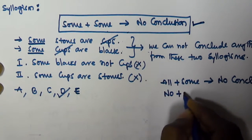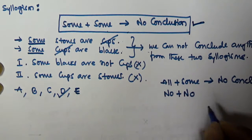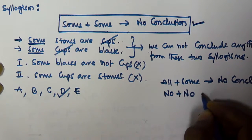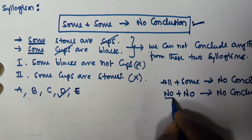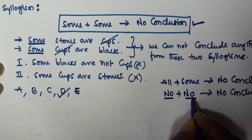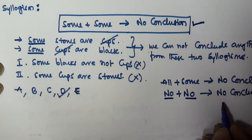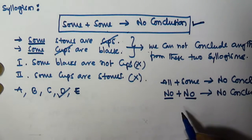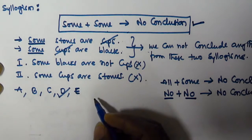Also, 'no plus no' gives no conclusion — whenever the first statement starts with 'no' and the second also starts with 'no,' and the predicate of the first is equivalent to the subject of the second. In that case we cannot conclude anything either, so directly select option D. The given two conclusions will both be false.